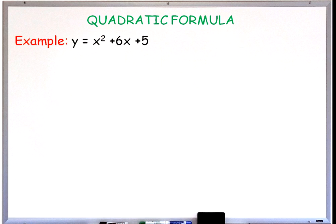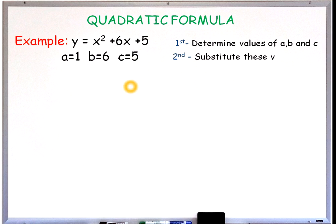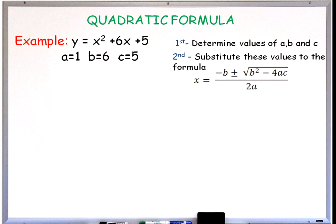Let's take another example: y is equal to x squared plus 6x plus 5. First, we have to identify the values of a, b, and c in this equation. Our a is equal to 1, b is positive 6, and c is positive 5. Now substituting the values into our quadratic formula.